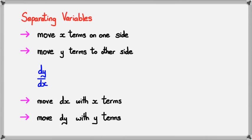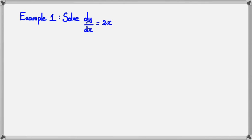Moving on to examples. In this first example, I want to solve dy/dx = 2x. Most of you would probably know how to do this straightaway, since 2x is just the derivative of x squared. But let's do it in this particular way: we have dy/dx = 2x, and there is no y to move around.